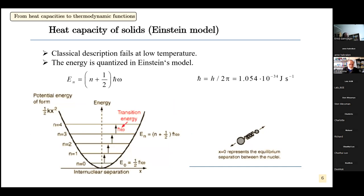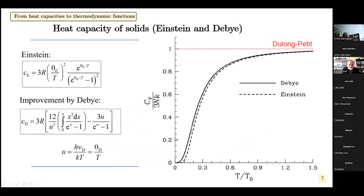For one atom, the energy is three times the Boltzmann constant times temperature; for one mole, it is three times the gas constant times temperature. The heat capacity at constant volume is then 3R, which is the law of Dulong-Petit. This works reasonably well at room temperature for heavier elements but is a poor fit at low temperatures. Einstein improved this by quantizing the energy — a quantum atomic spring. Debye further improved it by considering that atoms are all connected in the crystal lattice, giving a very good description of the ultra-low temperature range of heat capacity.